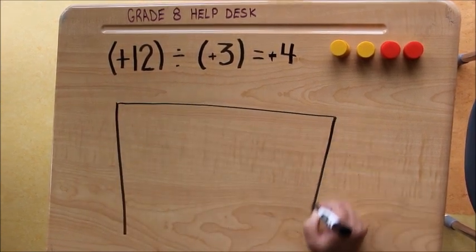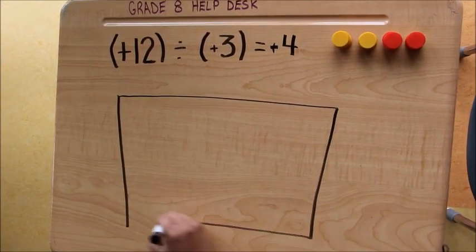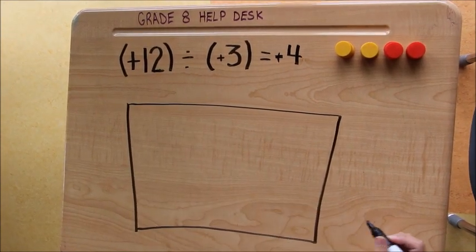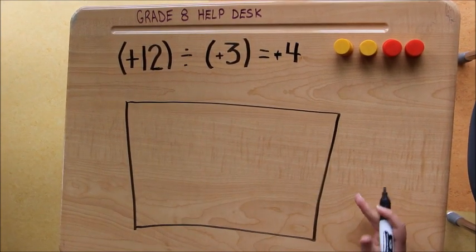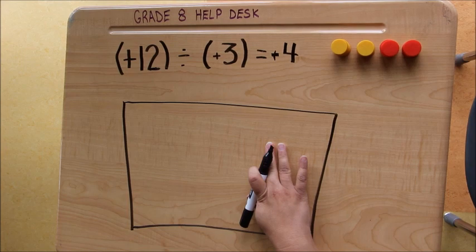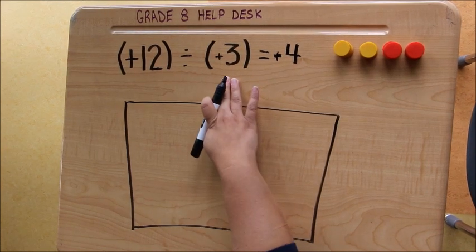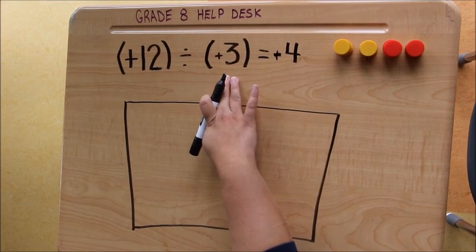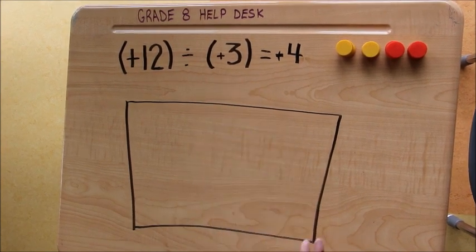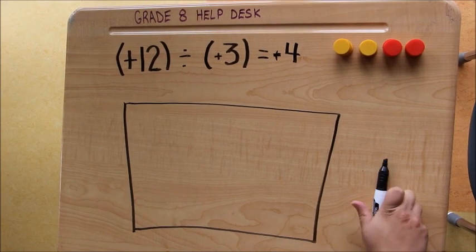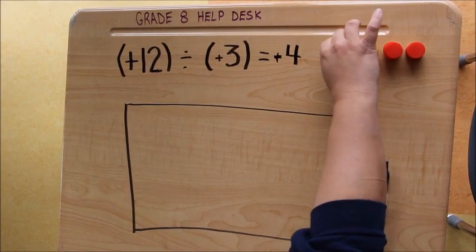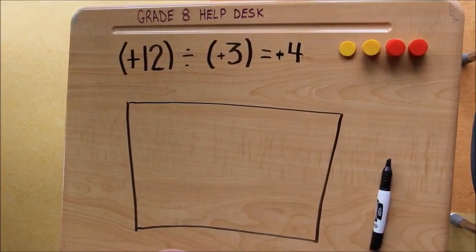So I'm going to start with my bank, and positive 12 tells me that in the end, I need to have positive 12 tiles in my bank. The next number, which is the divisor, tells me that I need to put them in groups of 3 tiles until I hit 12.